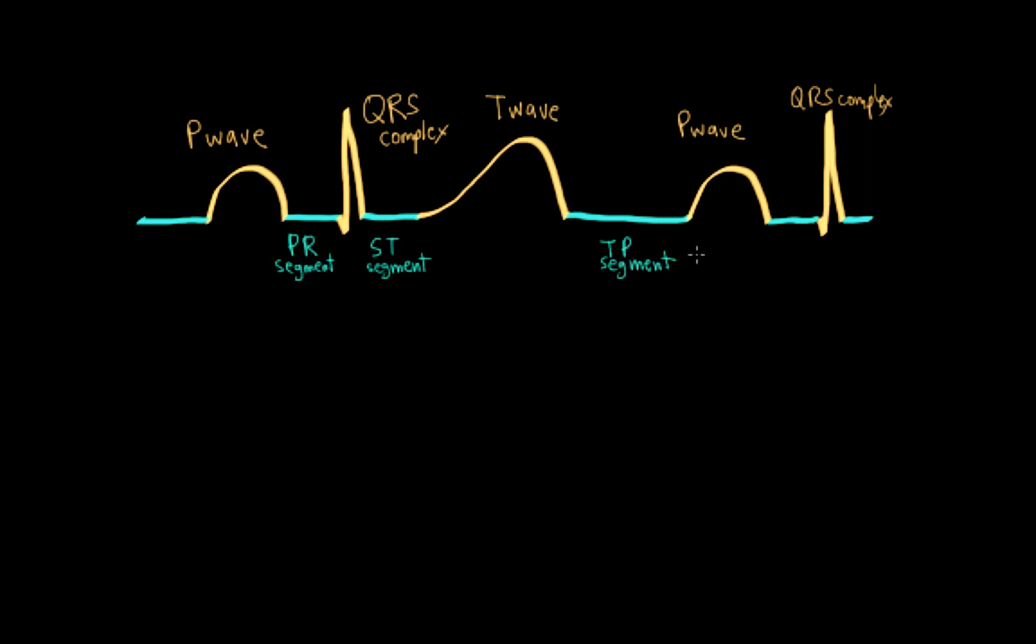Although you may see following the T wave in some individuals a small rounded deflection called the U wave, which really has not much significance except that it's pretty prominent in certain conditions like hypokalemia.